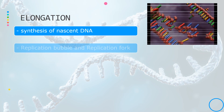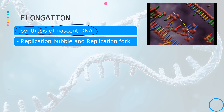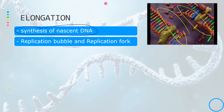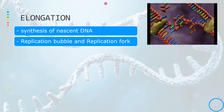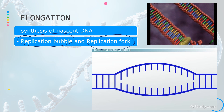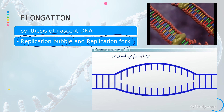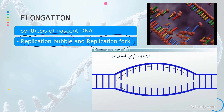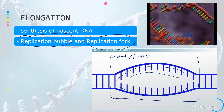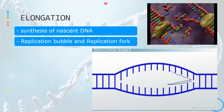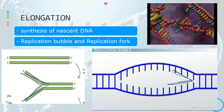The second stage is elongation, where the actual synthesis of the new polynucleotide strand is made using the template DNA strand. Right before elongation happens, the replication bubble and the replication fork form. The replication bubble results from the unwinding — or melting — of the double-stranded DNA, creating a space or bubble. Inside this bubble is the replication fork, which continues to grow as replication progresses.